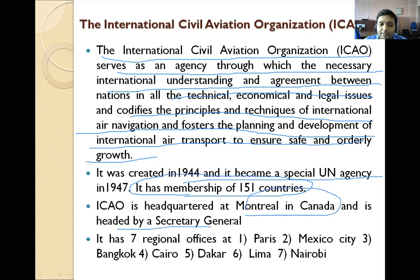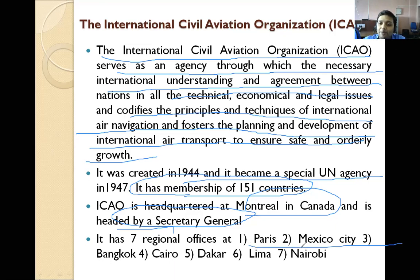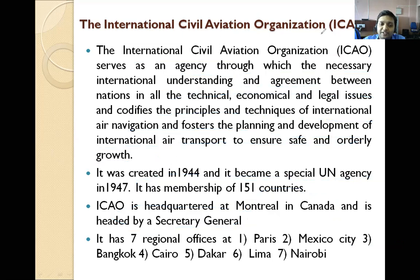ICAO is headed by the Secretary General and has seven regional offices at Paris, Mexico City, Bangkok, Cairo, Dakar, Lima, and Nairobi.